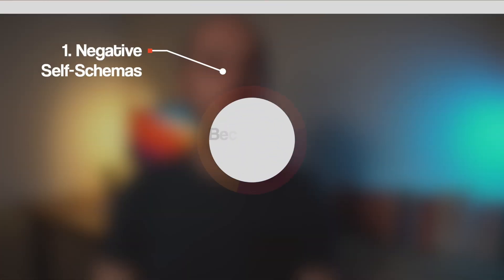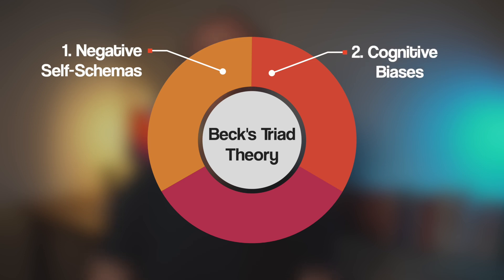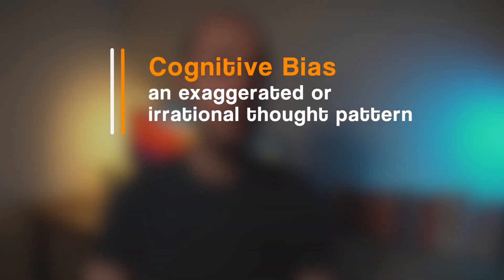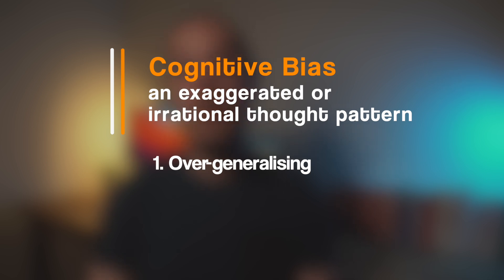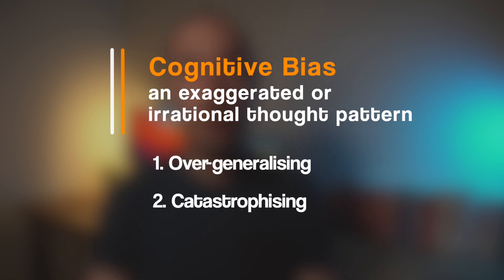The second part of Beck's theory refers to how these negative self-schemas become cognitive biases, which Beck suggested develop as they become adults. A cognitive bias is an exaggerated or irrational thought pattern. Two examples include: firstly, overgeneralising — where someone suffering from depression makes a sweeping conclusion based on something that has perhaps only occurred once — and secondly, catastrophising, where someone suffering from depression exaggerates a minor incident and believes it's a big disaster.